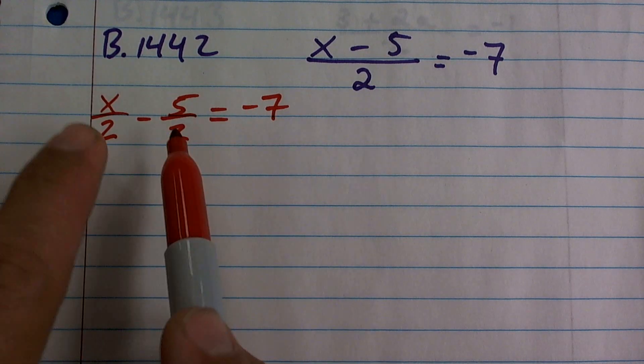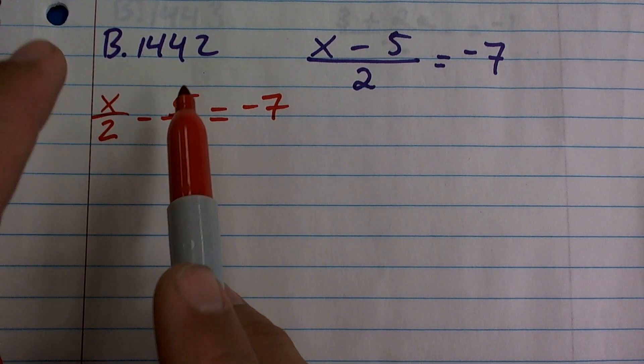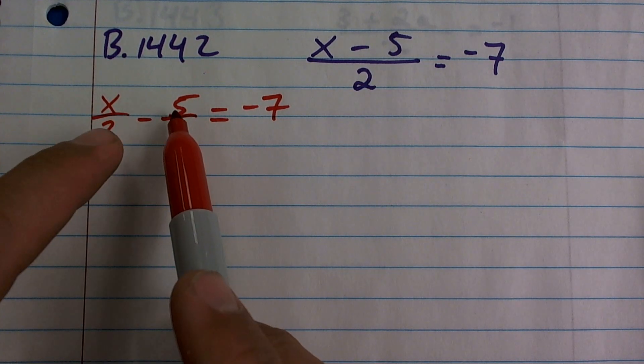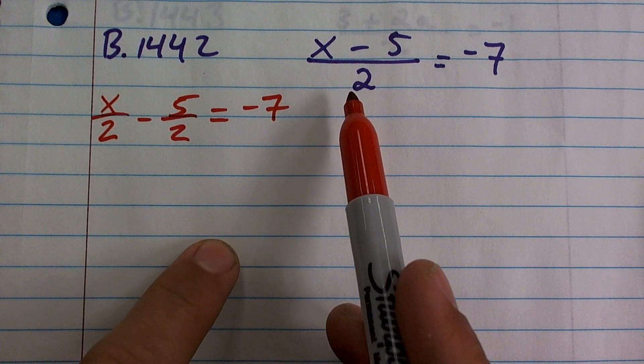But remember, when you subtract fractions, as long as they have the same denominator, you just subtract the numerators. Well, here, the numerators can't be combined, so that's why it's written like this.